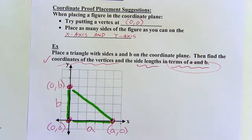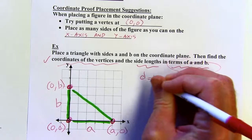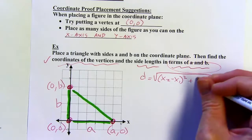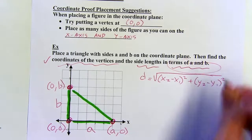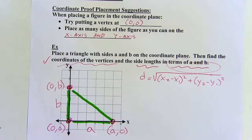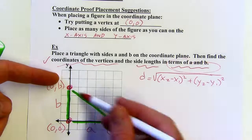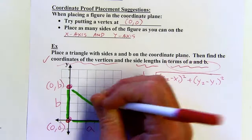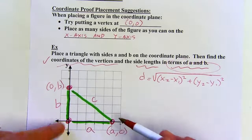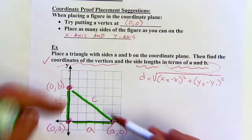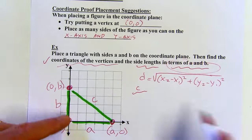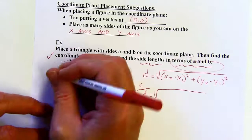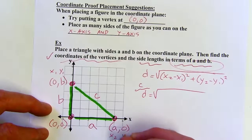Now I need the side lengths. I've got two of the three side lengths; I need the third. In order to get the third side length, I'm going to use the distance formula, which looks like this: you're going to subtract the x's and square, subtract the y's and square, add those two values together, and take the square root of the whole thing. I'm looking for this side — let me label it C. This is C units, but I want to write C in terms of A and B. So I'll call this x1, y1 and this x2, y2.